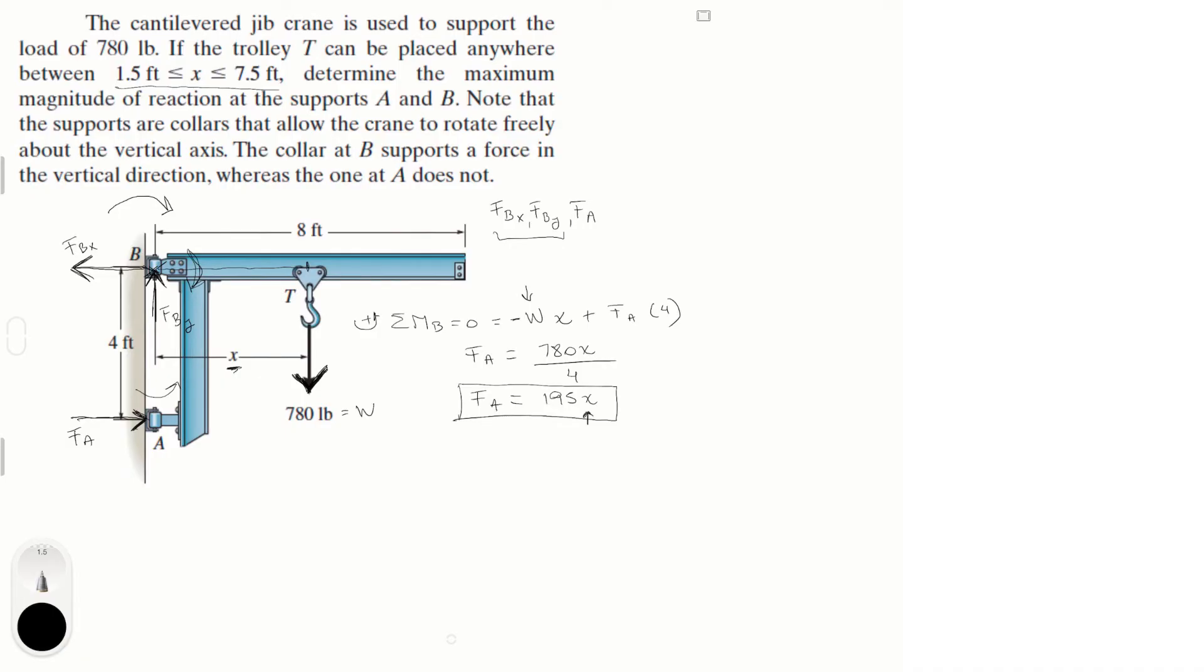Now let's find F of B of x, which is very easy to find, since it's the only other horizontal force in this diagram. So sum of the forces at x is equal to 0, and it is equal to F of B of x, going to the left, plus F of A.